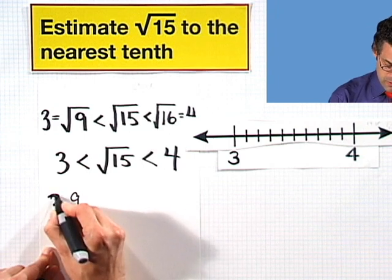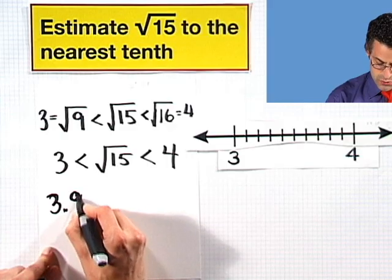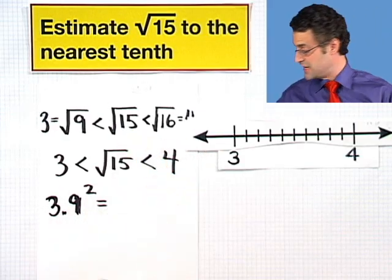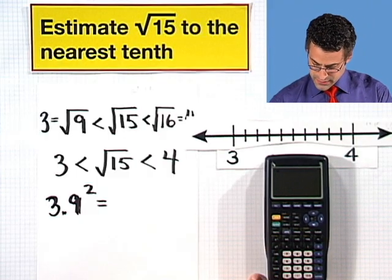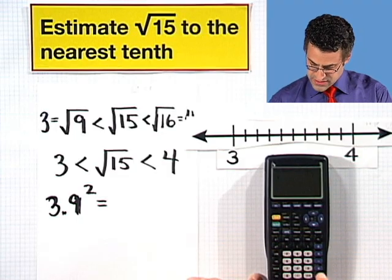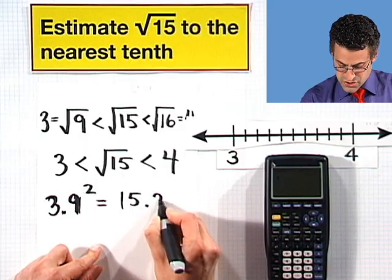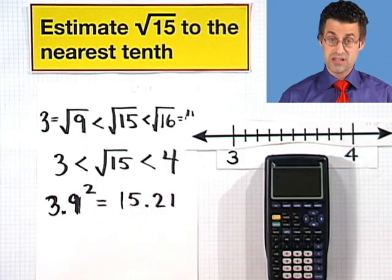Well, how do I know if that's a good guess or not? The only game in town is to consider the square of 3.9 and see how close it is to the number 15. Well, we can just do that on the calculator. So I'm going to take 3.9 and square it, and when I do that, I see 15.21, which really isn't that bad at all of an approximation to the square root of 15.